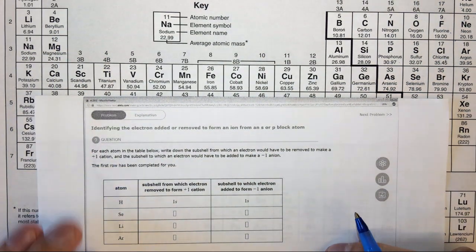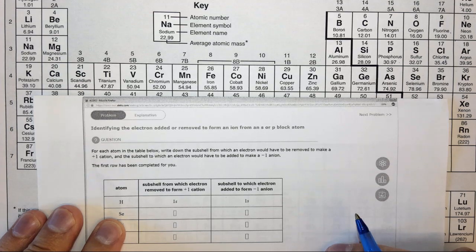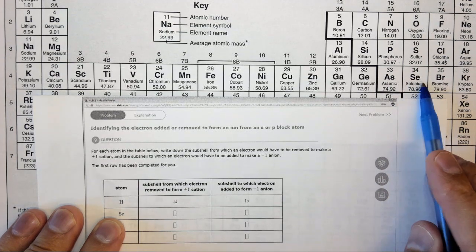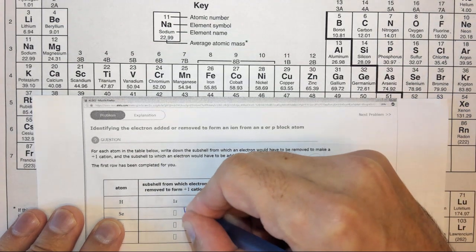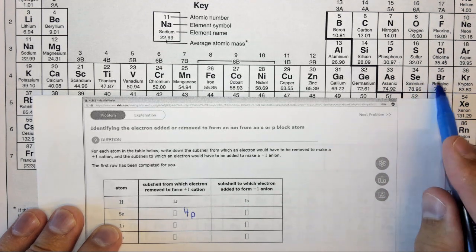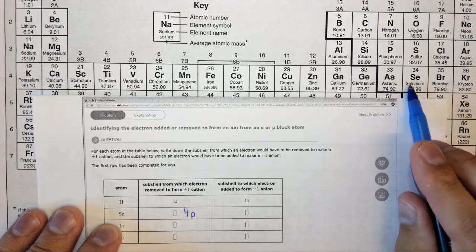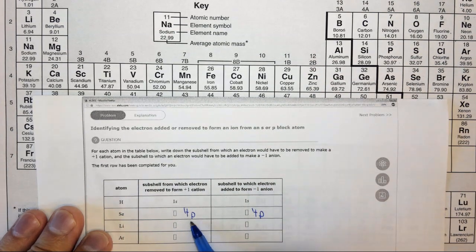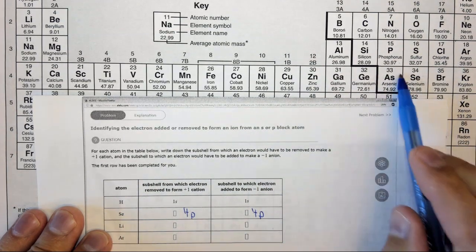So in selenium, if we remove an electron to form a plus 1 cation, we're going to remove a 4p electron. If we add an electron, so we make it isoelectronic with bromine, we're also going to add an electron to the 4p orbital. So in this case we would add and take out an electron from the 4p.